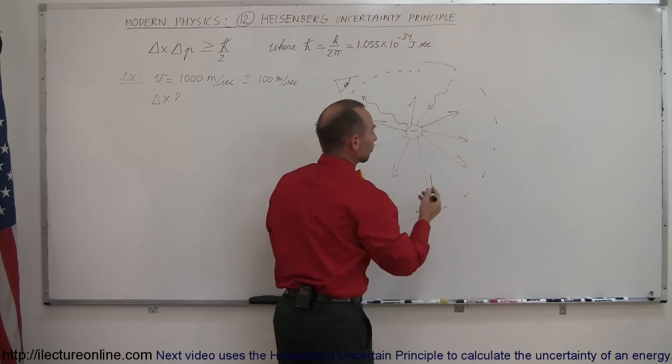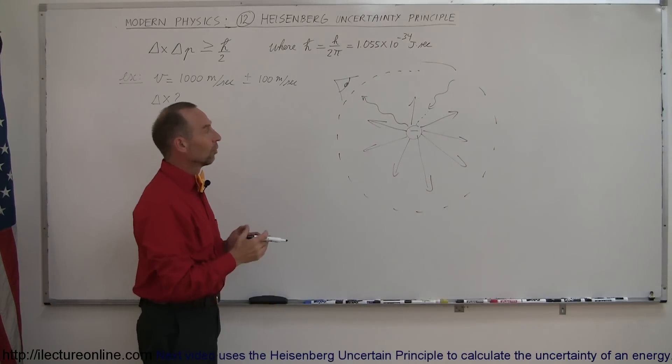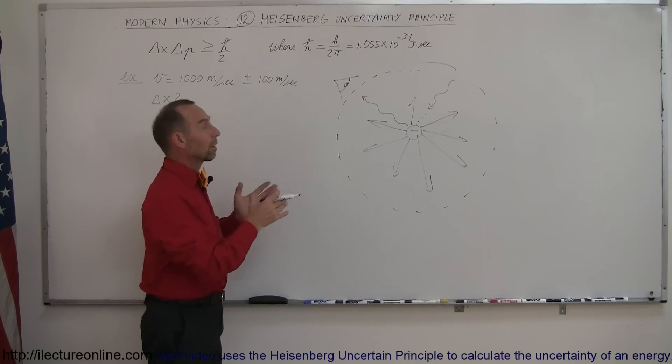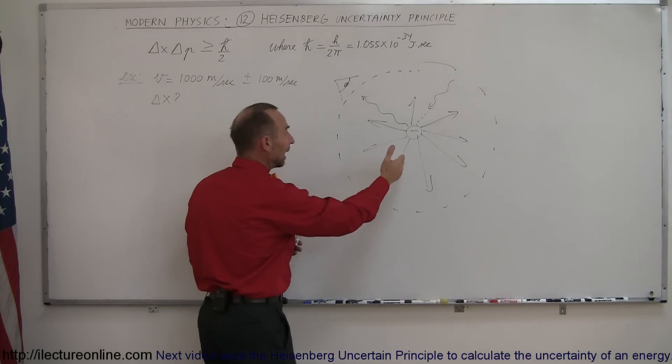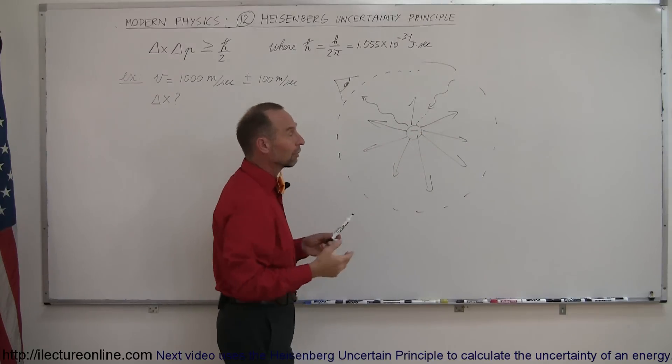The faster the electron, the bigger that circle becomes. So we wouldn't know how fast the electron is moving, we wouldn't know where the electron would be at, there would be a certain amount of uncertainty about its position and its velocity, or therefore also its momentum.